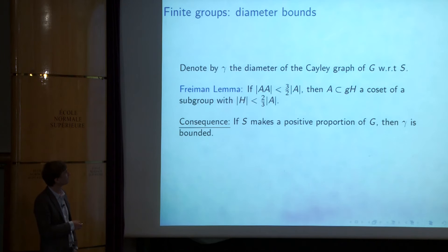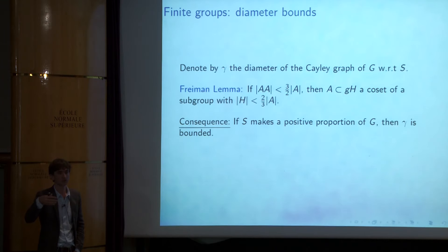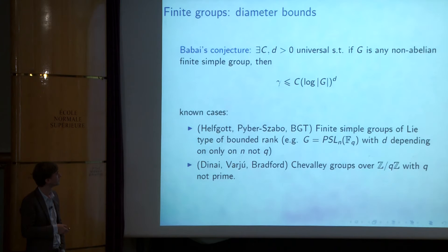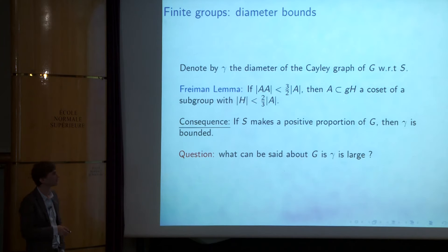In particular, whenever you have a group and a subset S that makes up a positive proportion of the group, the diameter is bounded, because it will grow and at some point exceed the three-halves threshold, giving you the whole group. So the question I want to address is: what can be said about a finite group if you know that the Cayley graph has large diameter?